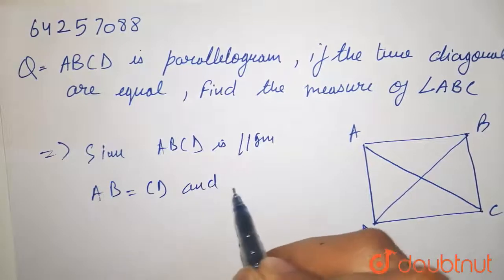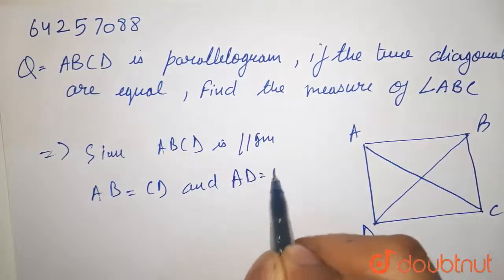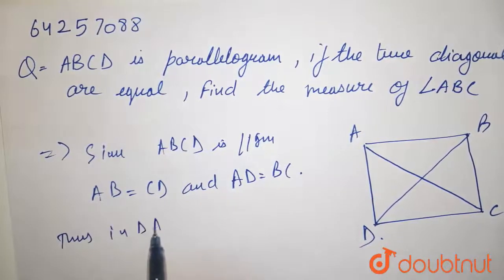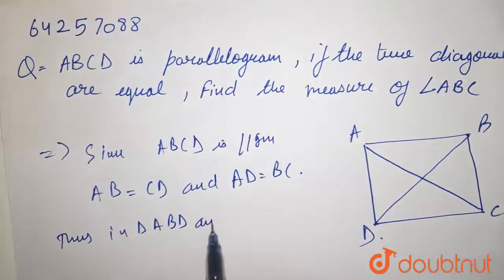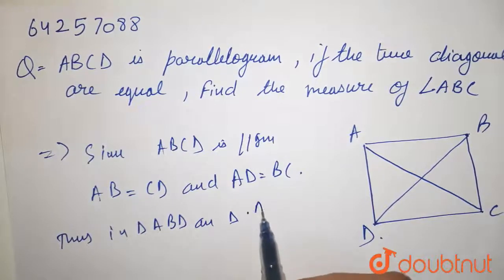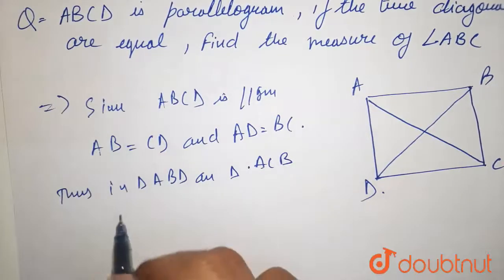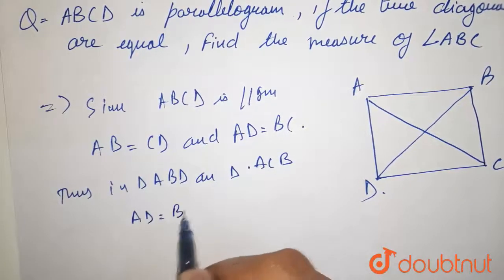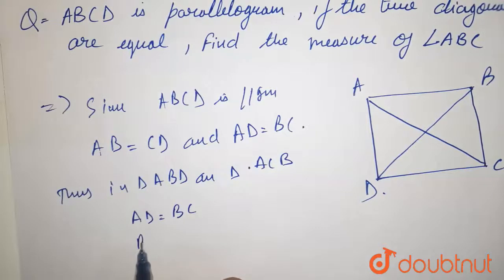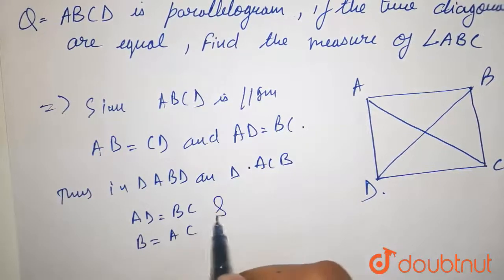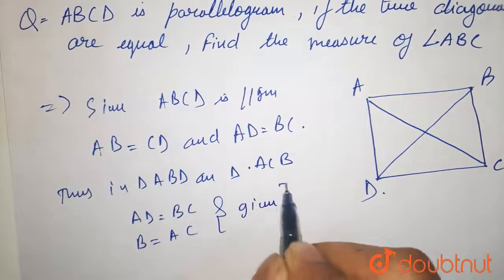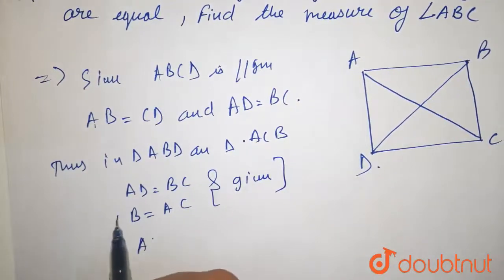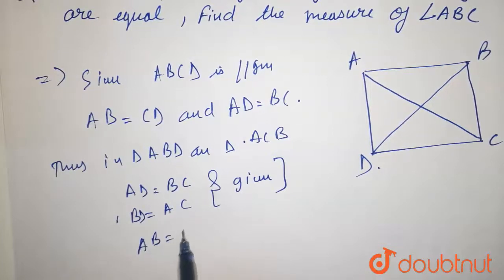Thus in triangle ABD and triangle ACB, AD is equal to BC, which is given, and BD is equal to AC, this is given. Also, AB is equal to AB,